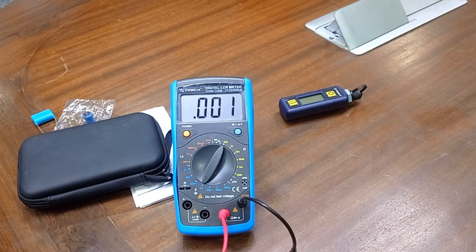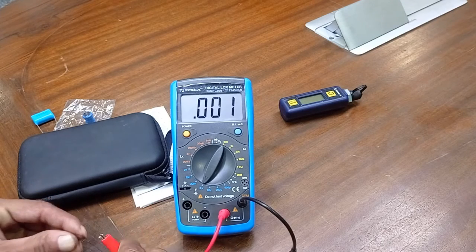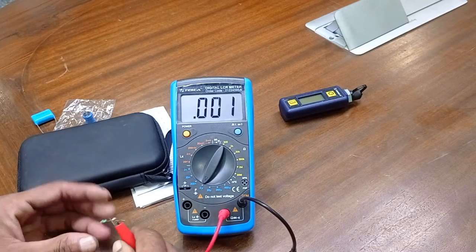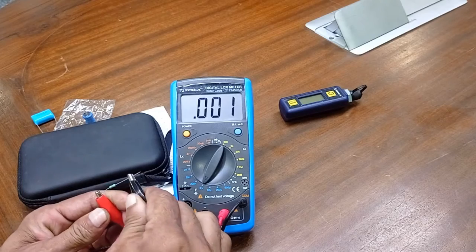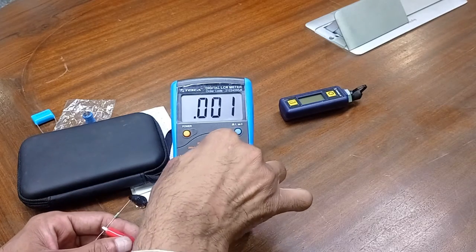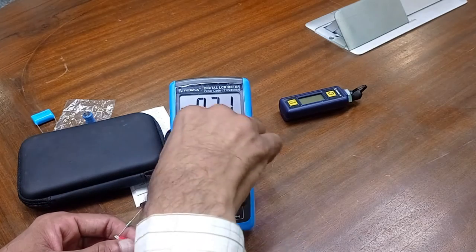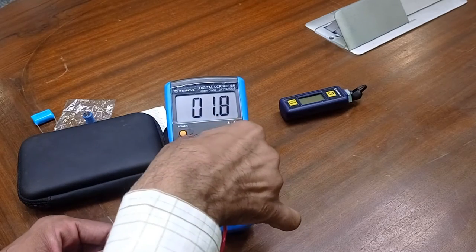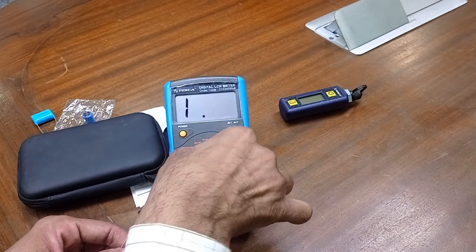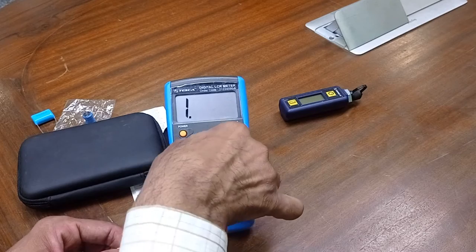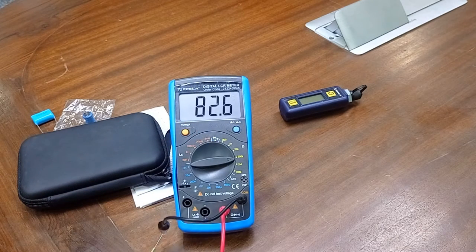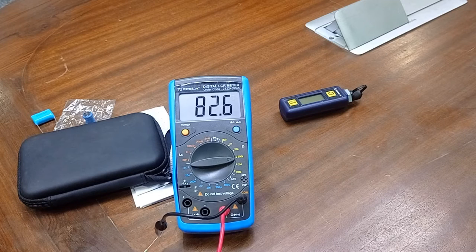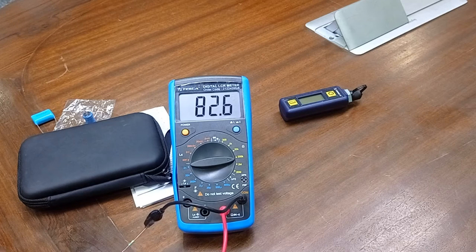For measurement of resistance, we have to take resistance and connect the leads. This is 82.6 ohms. We can see the value of this resistance.